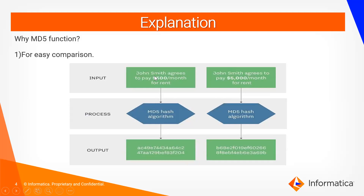If we want to compare this target with the source record directly, it will take a lot of time because we need to compare each and every character. Instead, if we apply the MD5 hash algorithm on the target data first, it becomes a 32-bit hexadecimal value. Then applying it on the source data gives a different hexadecimal value. Comparing them, since they are not the same, we load the source record into the target.